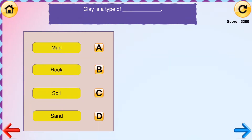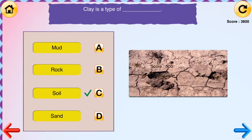Quiz question: Clay is a type of blank. The answer choices are mud, rock, soil, and sand. The correct answer is soil.